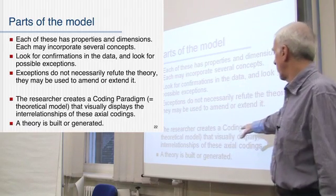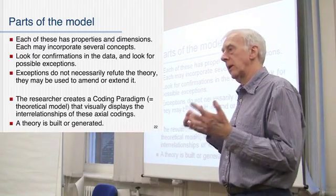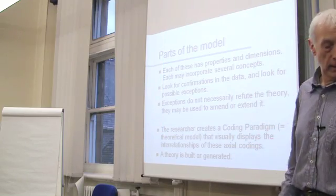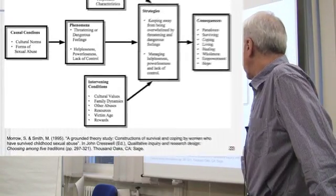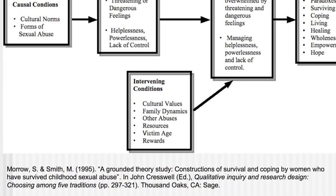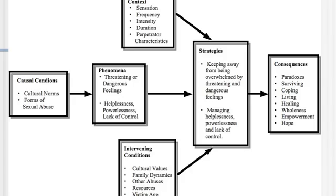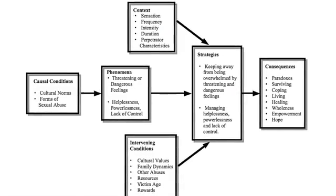So what you're doing is producing what they call a coding paradigm — a theoretical model that begins to develop connections between things in your setting, in your data. And here is an example of that, from a paper by Murrow and Smith, a grounded theory study: 'Constructions of survival and coping by women who have survived childhood sexual abuse.' That's the context of this model, and this is the model that Murrow and Smith came up with and published, about what's going on and how it's happening.